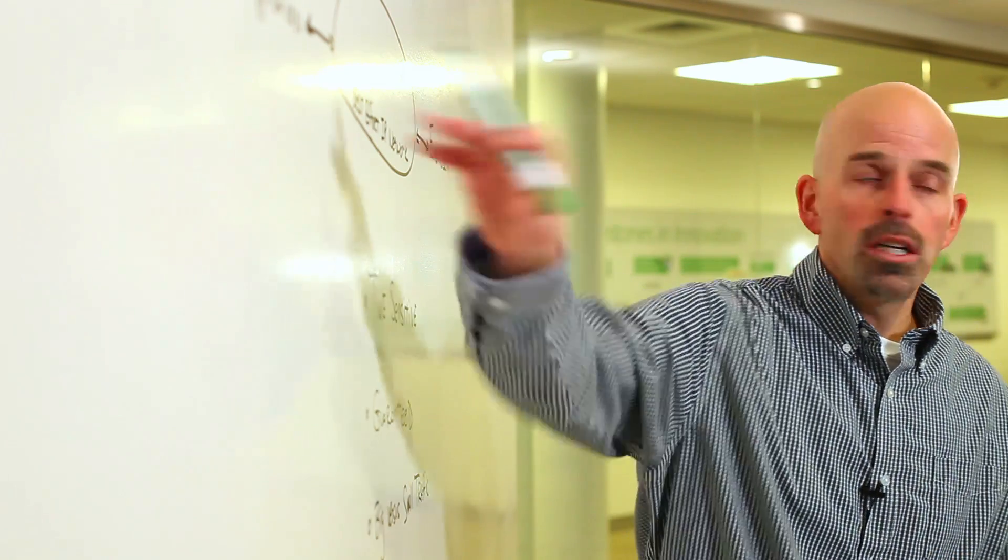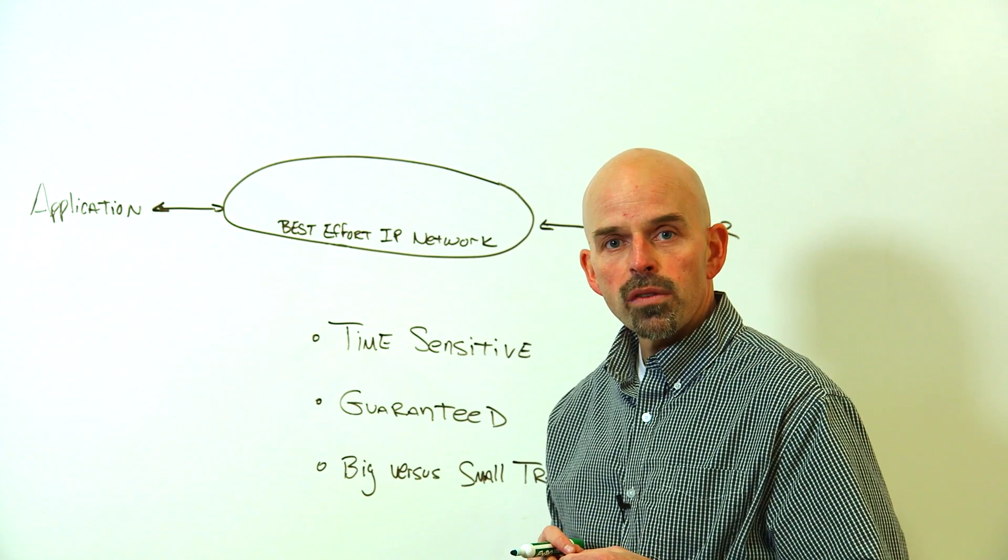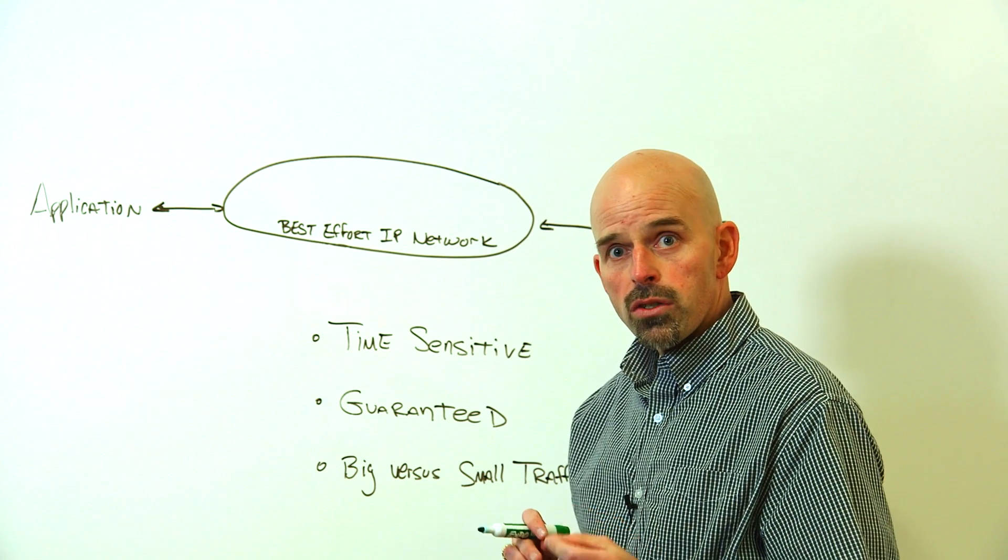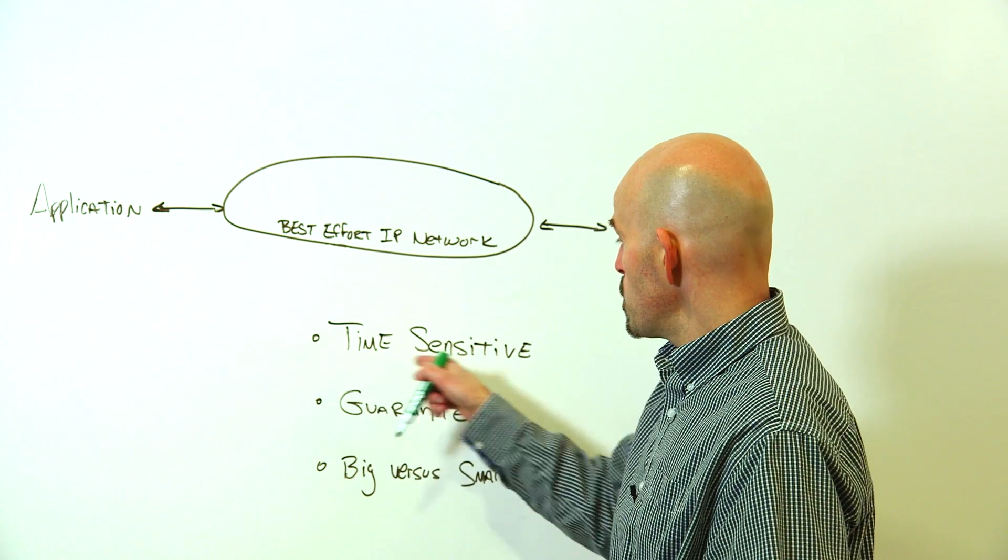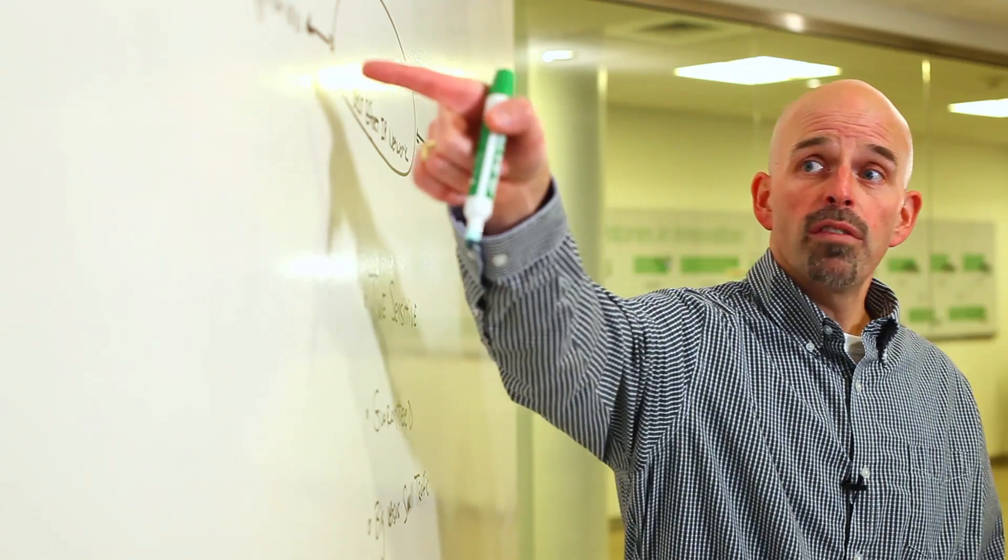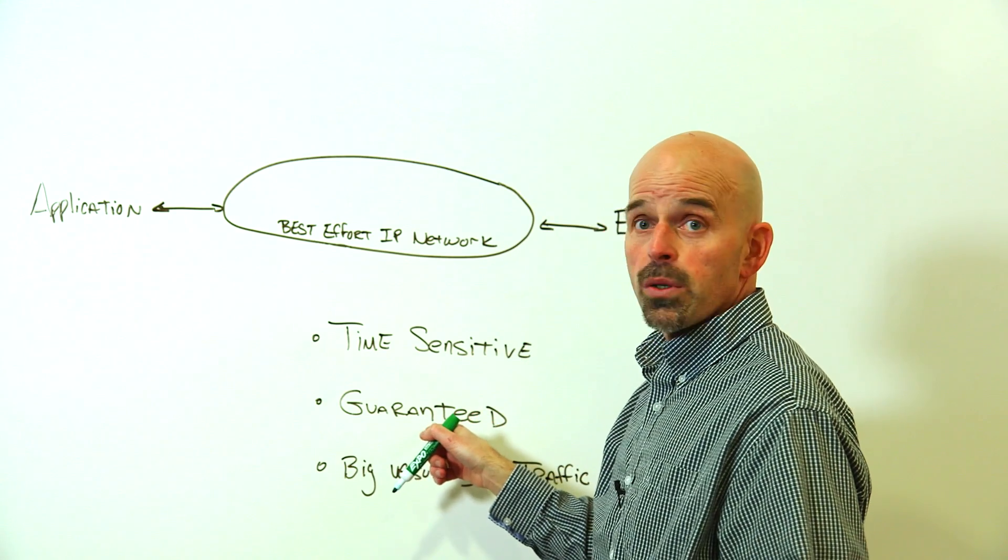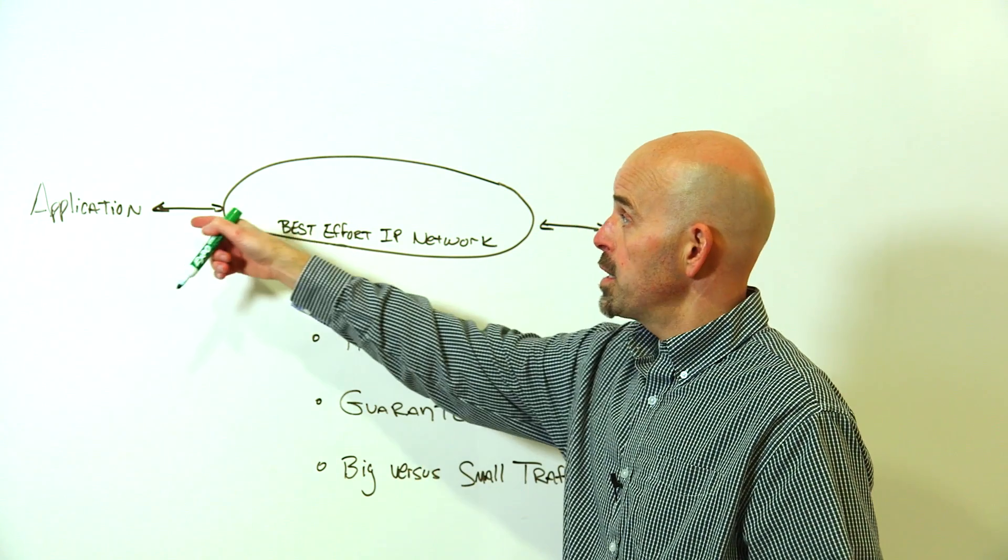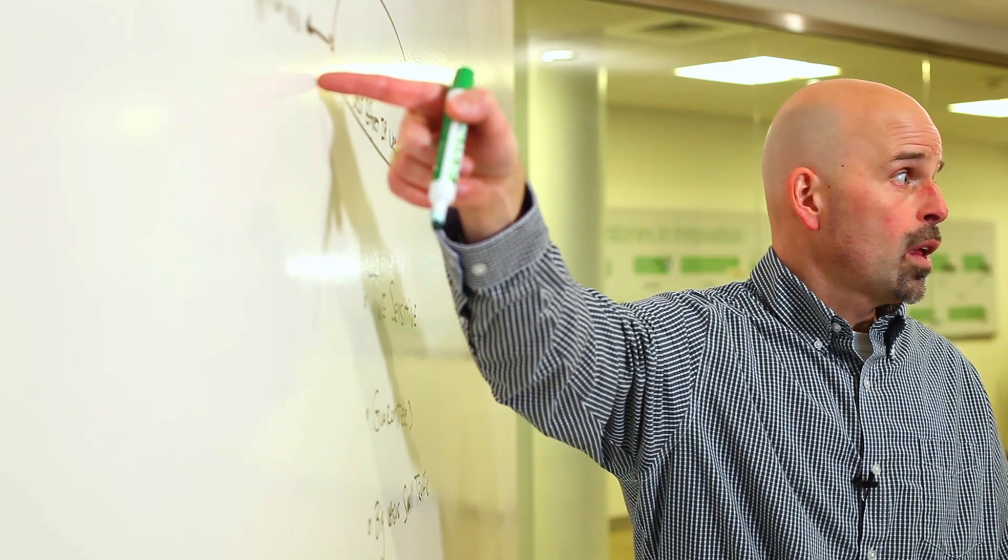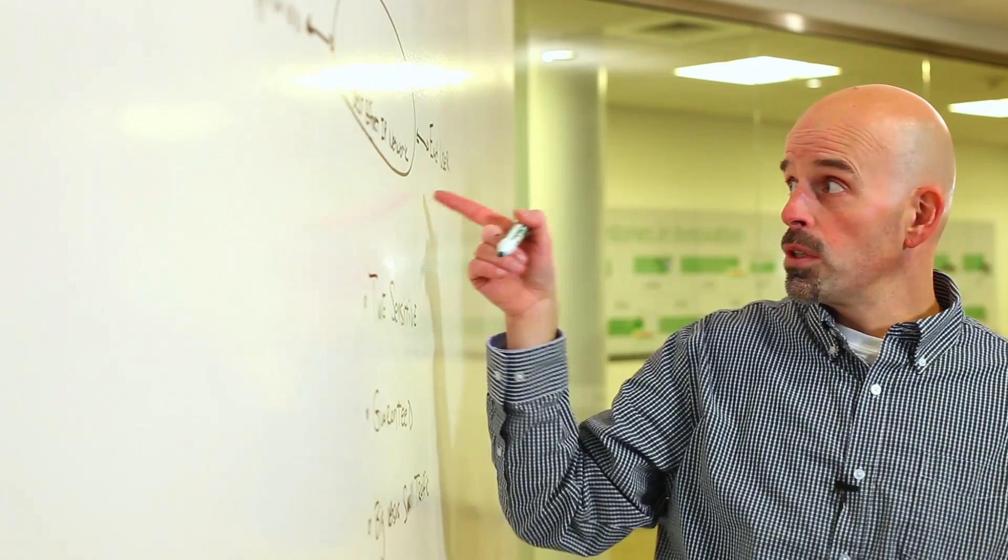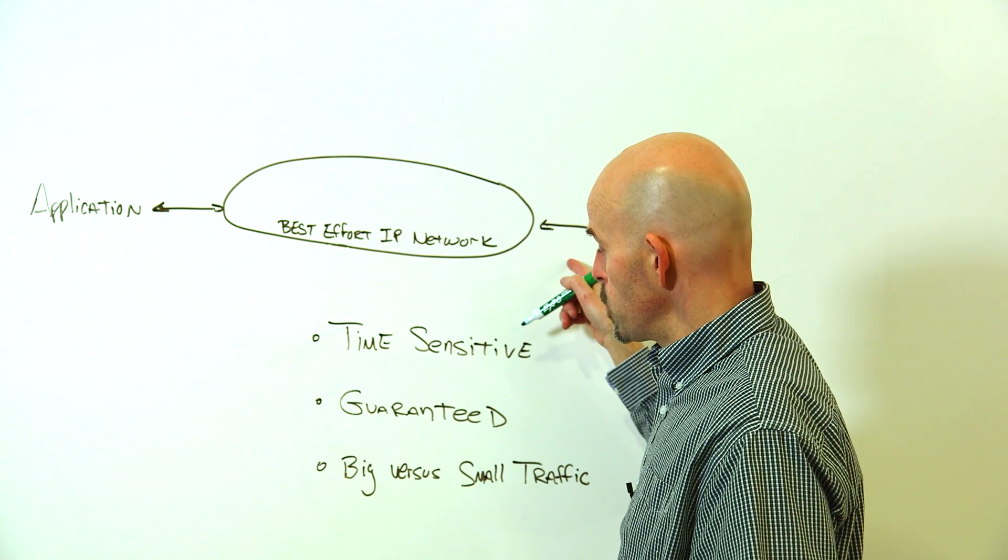Some of the things that applications and the types of traffic that they push over the network are sensitive to or require are time sensitivity, being able to deliver traffic from one side of the network to the other in an expedited manner, being able to have guaranteed delivery as an application pushes a service or flows or sessions to a user to be assured that those flows get to that end user.